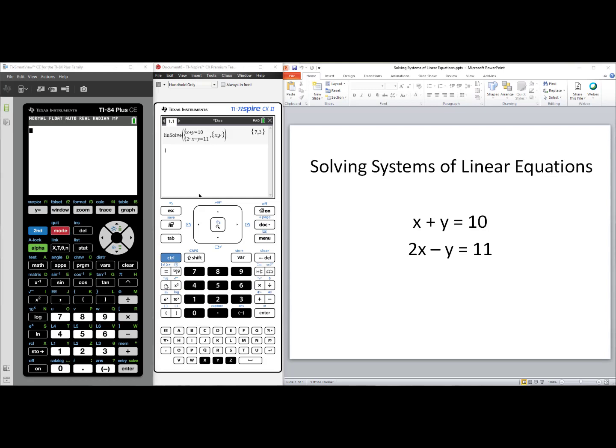Another way to solve this system of linear equations would be to use Reduced Row Echelon Form using a matrix. Start by pressing 2nd, Matrix, arrow to the right over to Math, and find Reduced Row Echelon Form, RREF, in that menu. Now, to create our matrix, press Alpha Zoom.